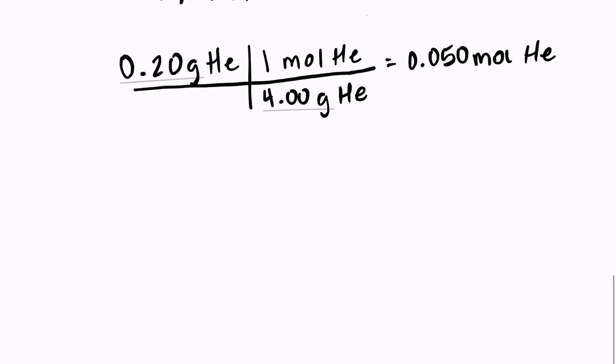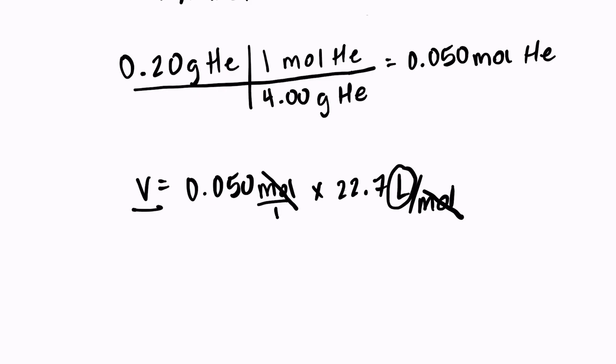Now we're just going to plug that into our formula. V is equal to 0.05 moles times 22.7 liters per mole. Notice I have a mole on top of a fraction, and I have a mole on the bottom of my fraction, so those do cancel out, and I'm left with a unit liter. So I have 0.05 times 22.7, which is equal to 1.1 liters of helium.